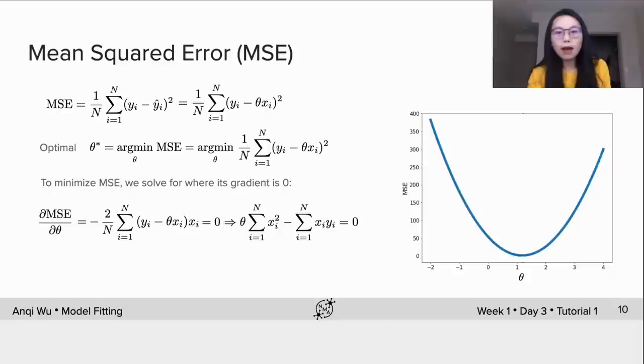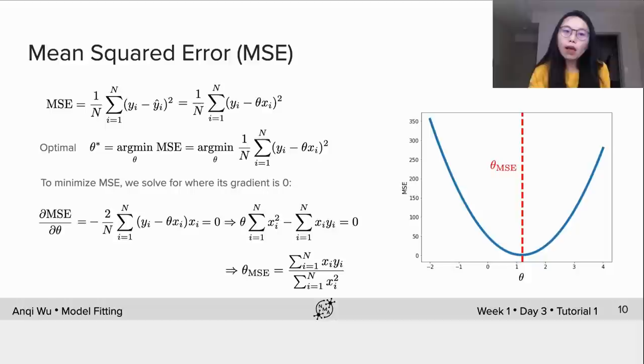After doing some math derivations, we could arrive at this closed-form solution for theta. We can plot theta_MSE on the figure and see that it's very close to the valley of the landscape.